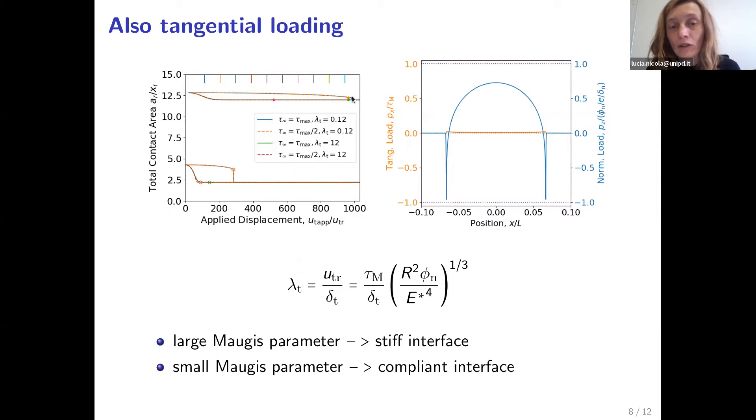If instead we use a small Maugis parameter, which means that we allow for some compliance at the interface, we allow for some relative displacements of the two interfaces before they give way, then we see that the contact area decreases much, much slower. And in fact, sometimes gross sliding occurs before even the final contact area is reached, and in that case there is an instability.